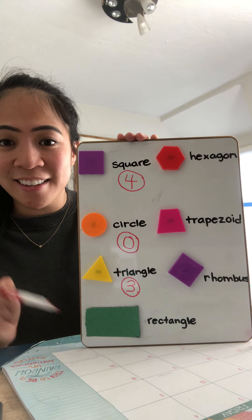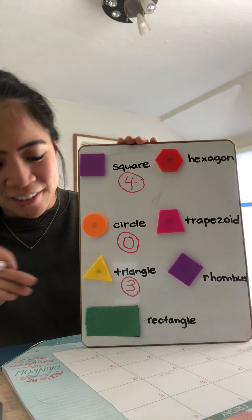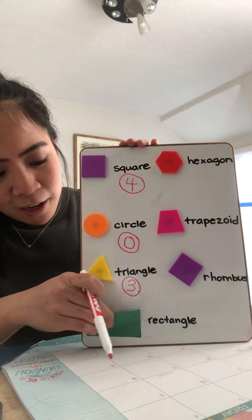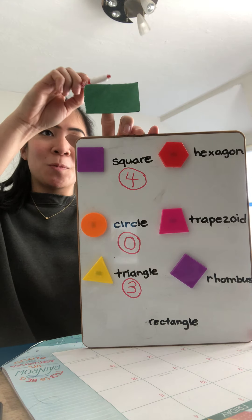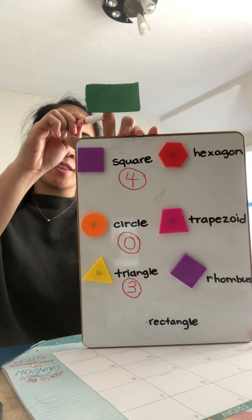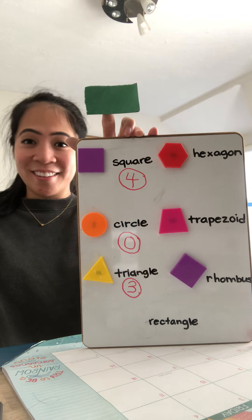Our next shape is rectangle. Can you guys count with me? How many sides does a rectangle have? Ready? One, two, three, four. Very good.